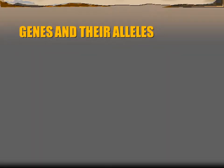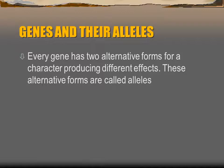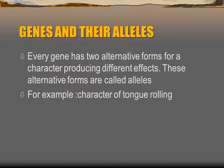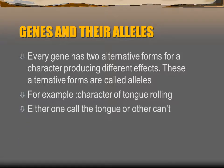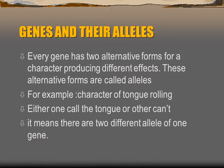Next are genes and their alleles. Each gene can have different forms that produce different effects. For example, consider the character of tongue rolling — if one sibling can roll their tongue and another cannot, they carry different alleles of the same gene. One allele performs one activity and the other does not, so they are two different alleles of the same gene.